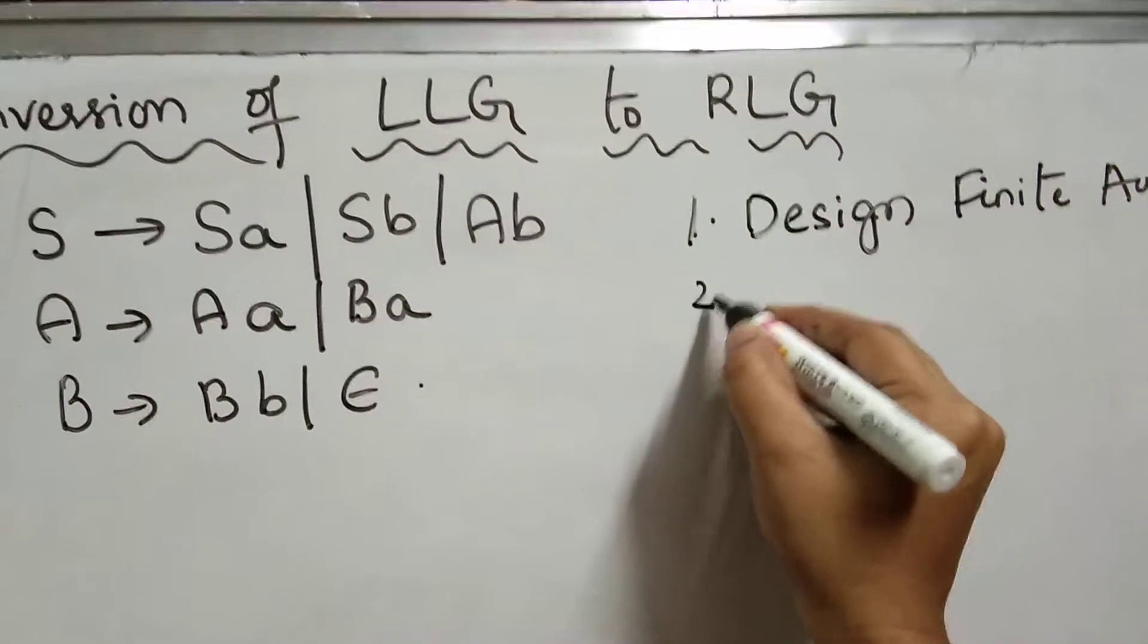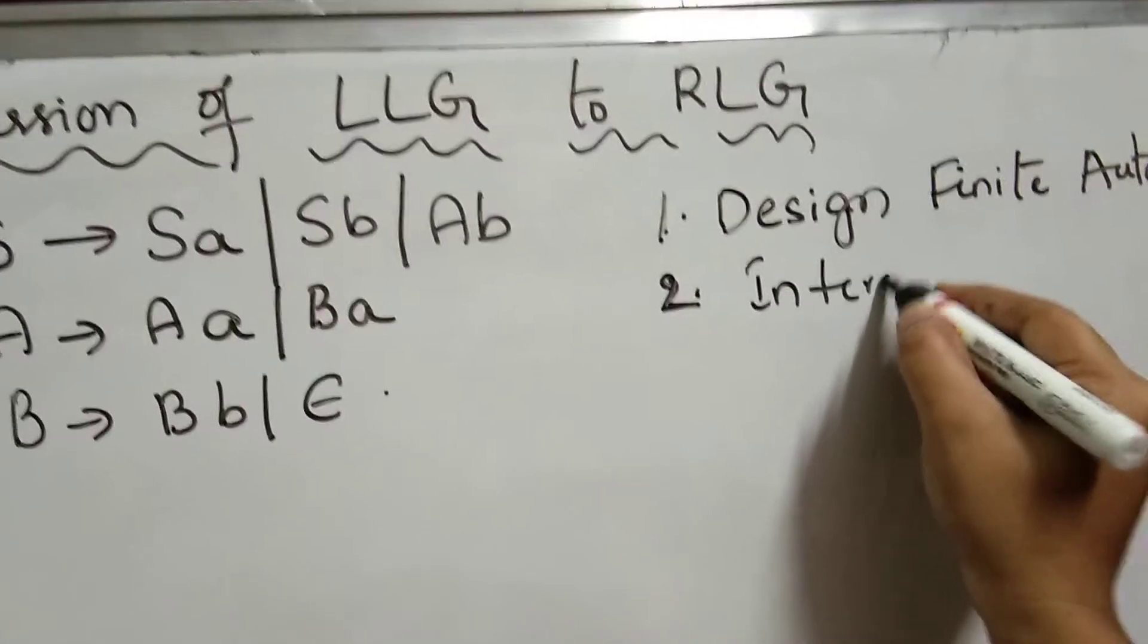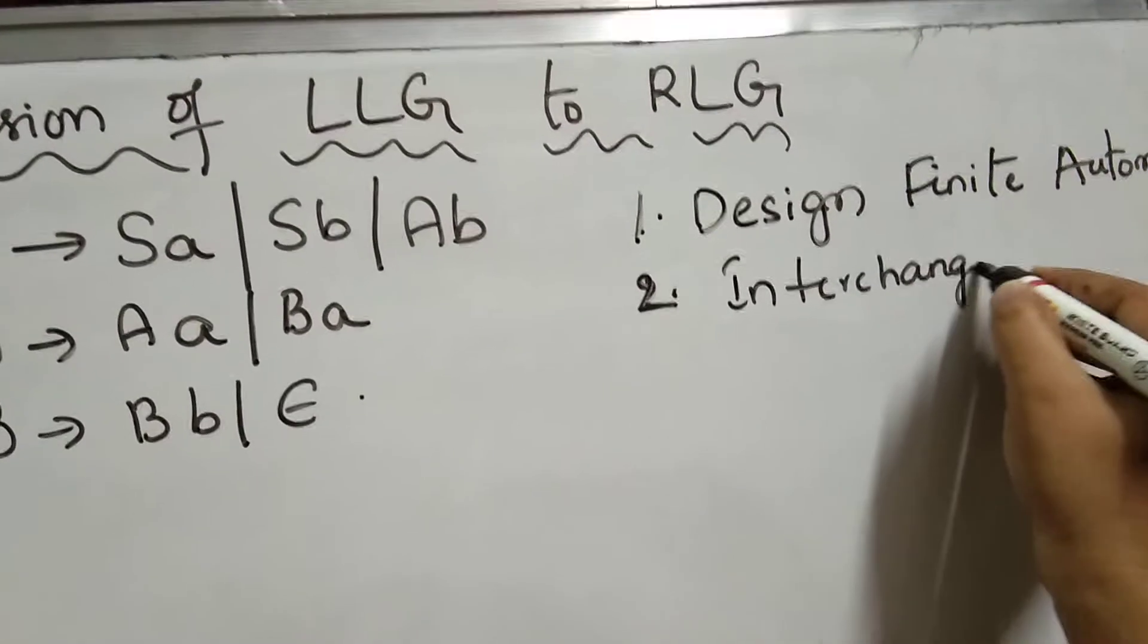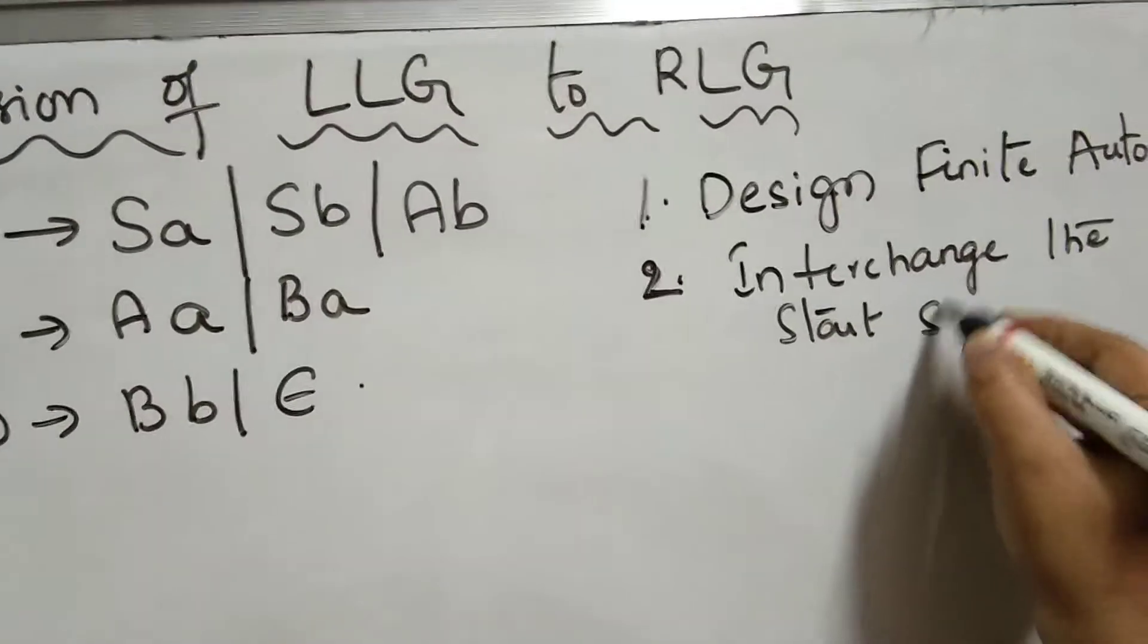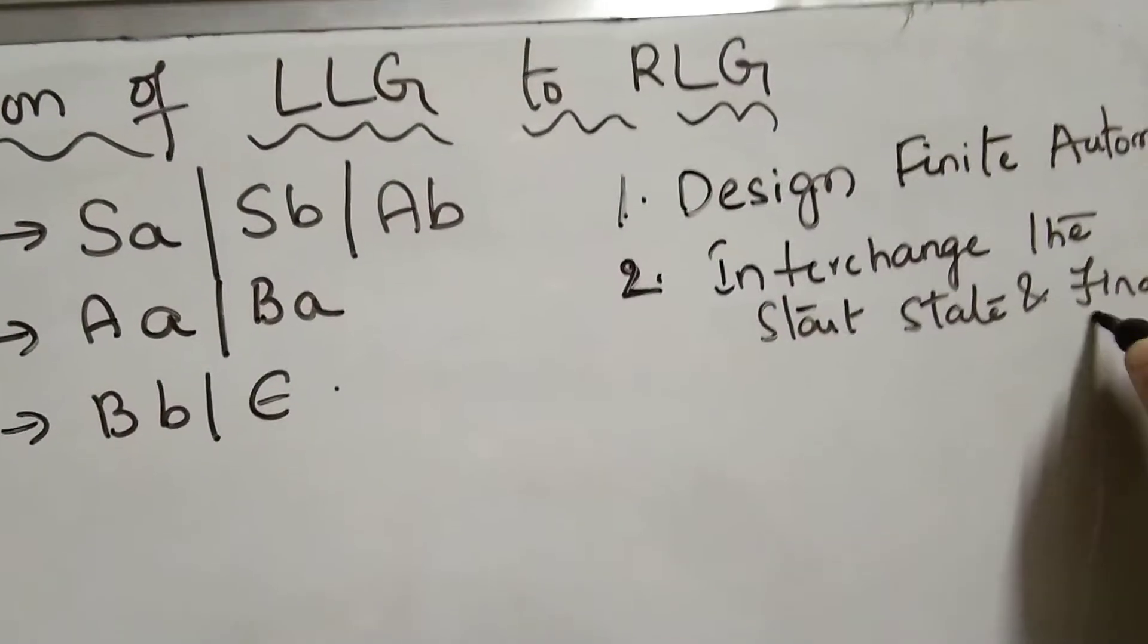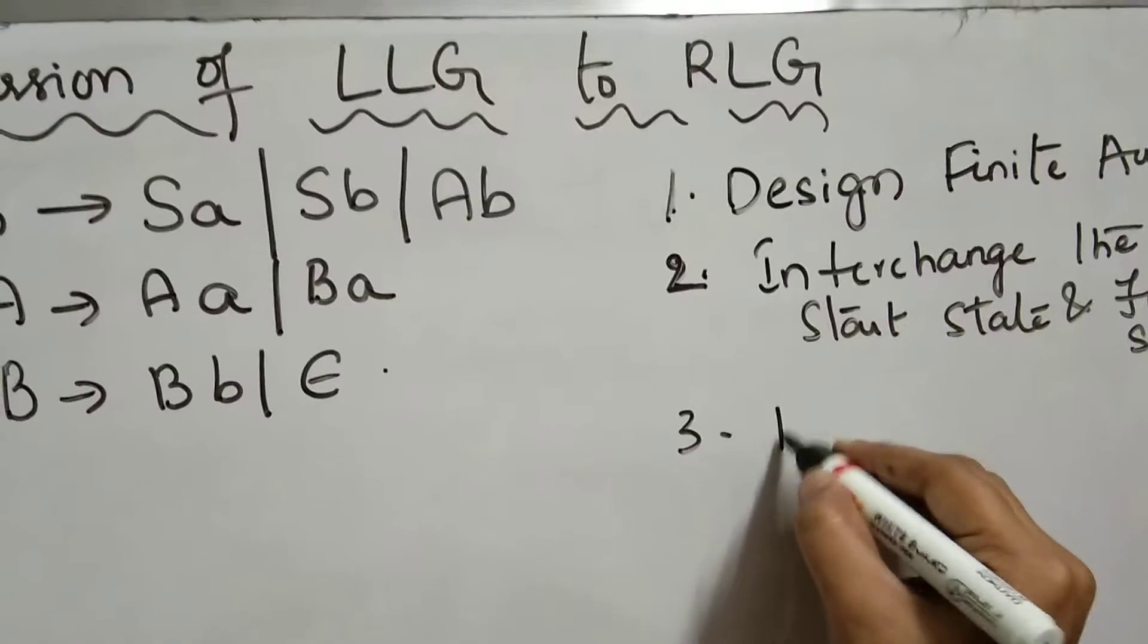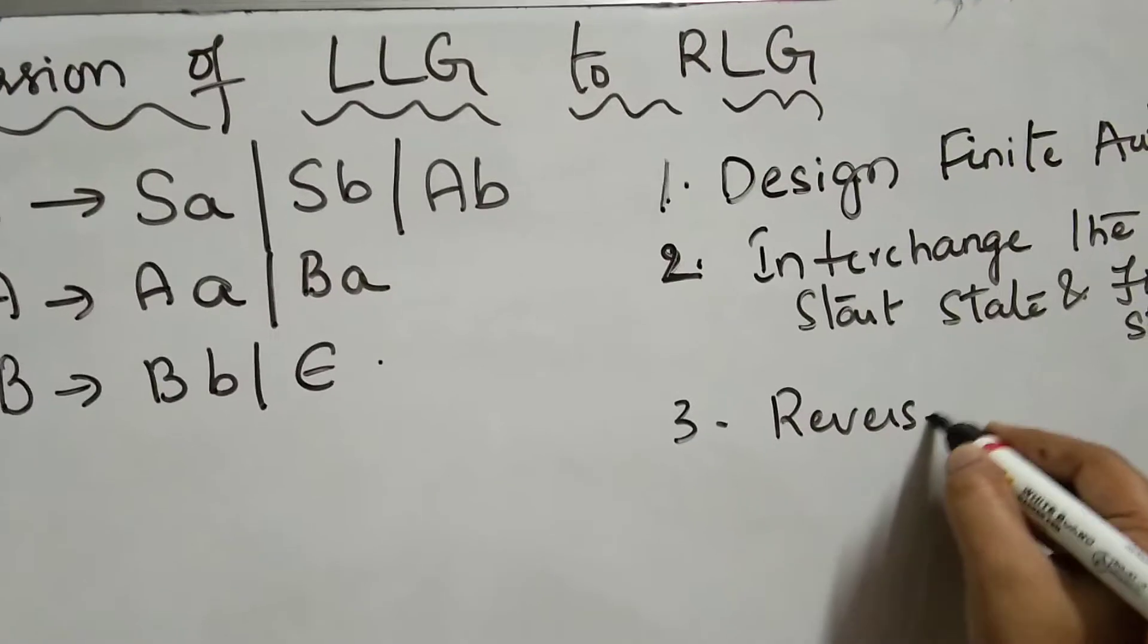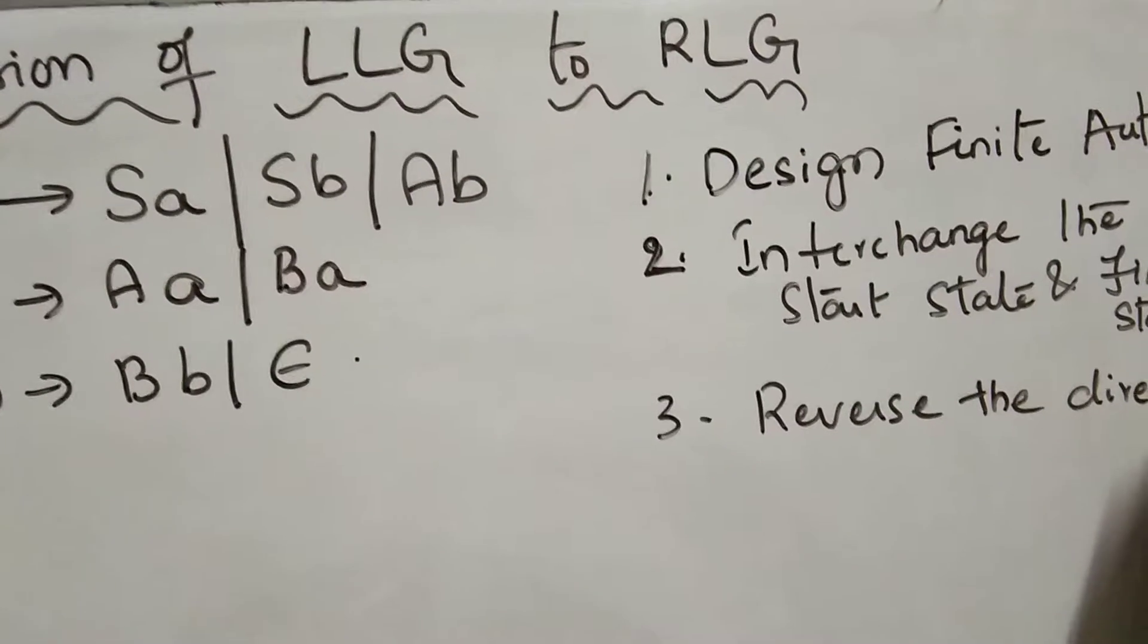Next, after designing the finite automata, interchange the start state and final state. The last step is to reverse the directions. That's it.